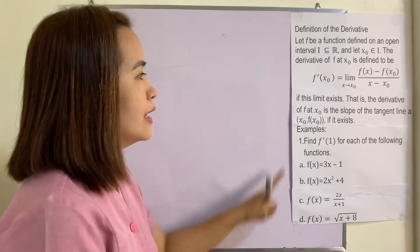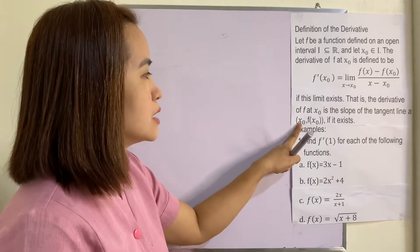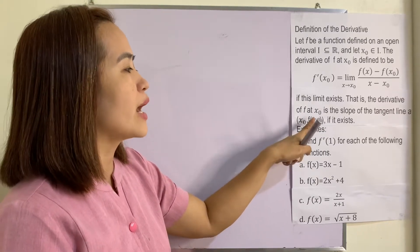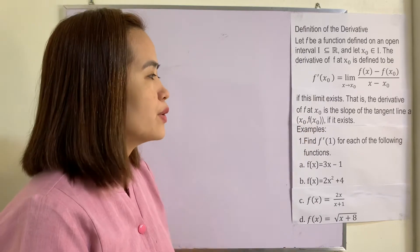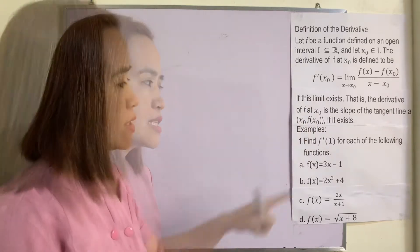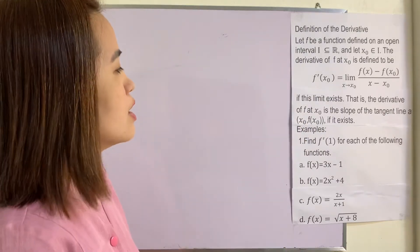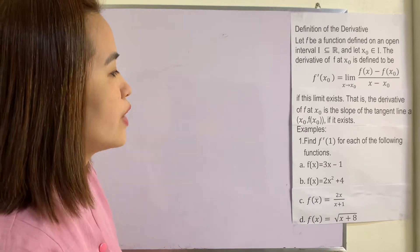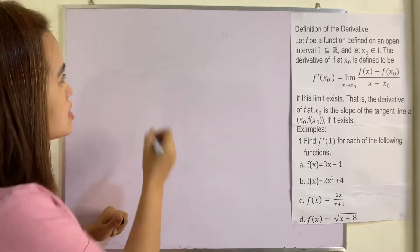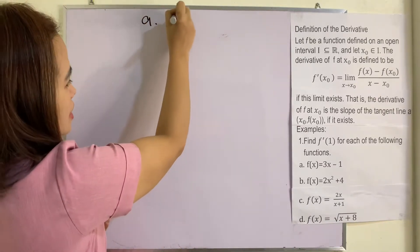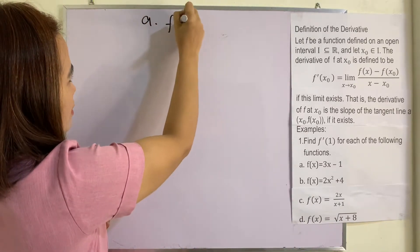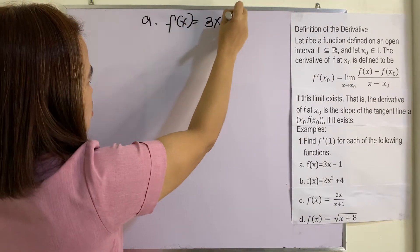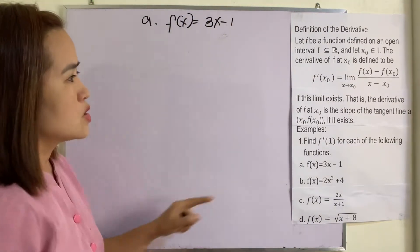That is, the derivative of f at x sub zero is the slope of the tangent line at (x sub zero, f of x sub zero). For our examples, find f prime of one for each of the following functions. Letter A: f of x is equal to 3x minus one.